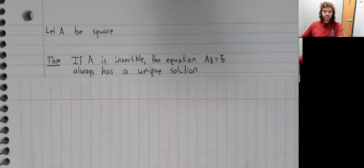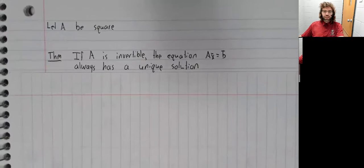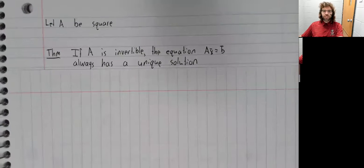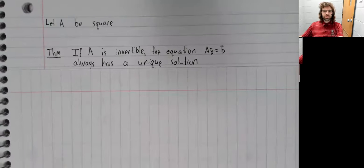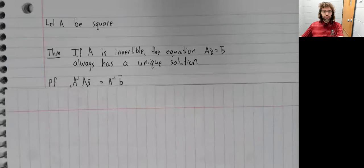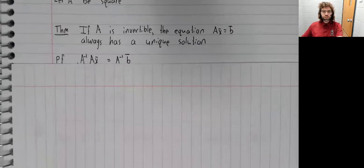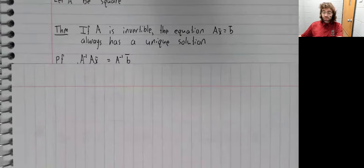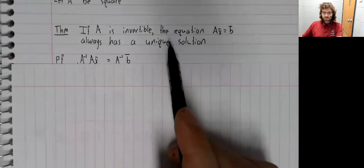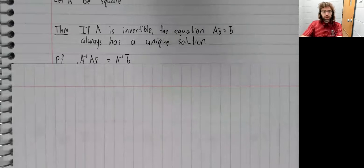Theorem: If A is invertible, then the matrix equation Ax equals B always has a unique solution. The way we're going to prove this is by direct computation. We're going to find this solution by multiplying both sides of this equality by A inverse.